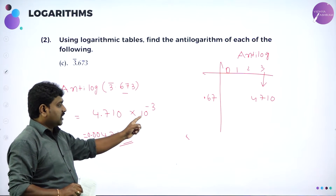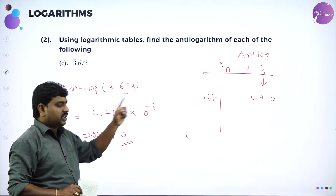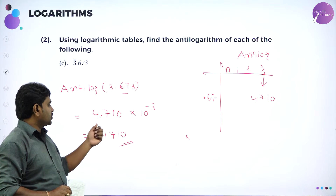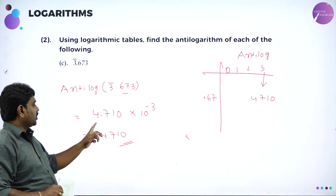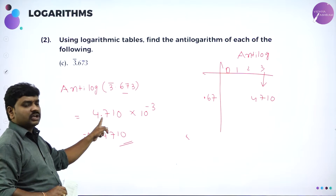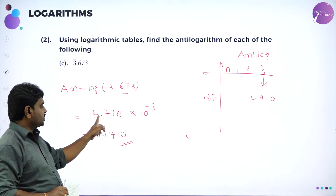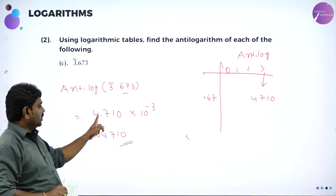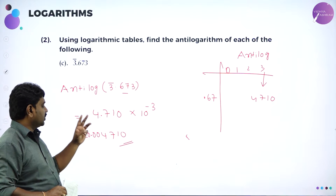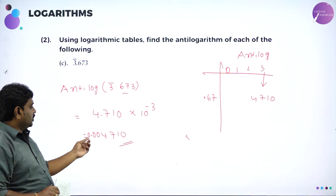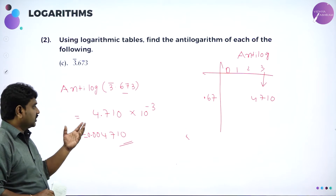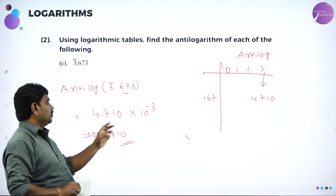Bar 3 means minus 3 — take it as-is. From 0.67 under column 3 you get 4710. After placing the decimal: 4.710. Bar 3 means shift the decimal three places left, so you need three zeros: the result is 0.004710.